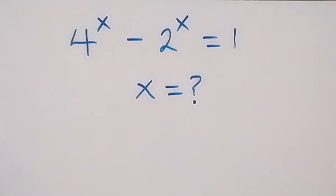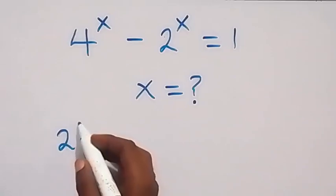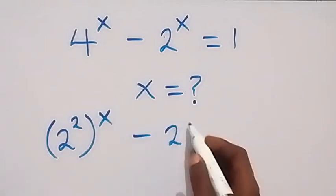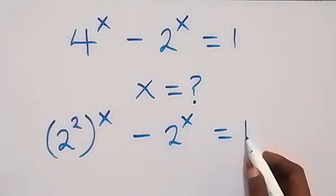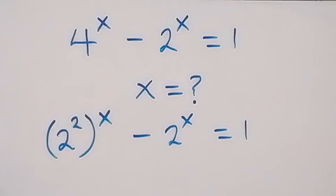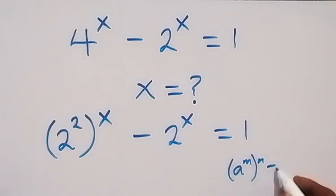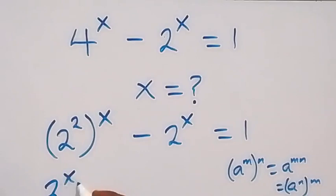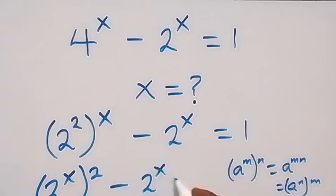From here, we can write this as 2 squared, then raised to power x, then minus 2 raised to power x is equal to 1. From the law of indices, when we have a raised to power m, then raised to power n, this is the same thing as a raised to power mn. So we can interchange this power, and this becomes 2 raised to power x, then raised to power 2, minus 2 raised to power x equals to 1.